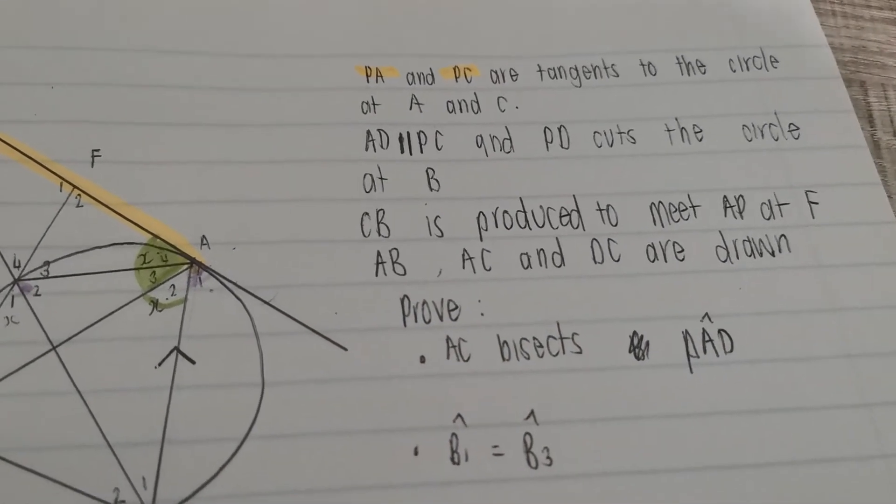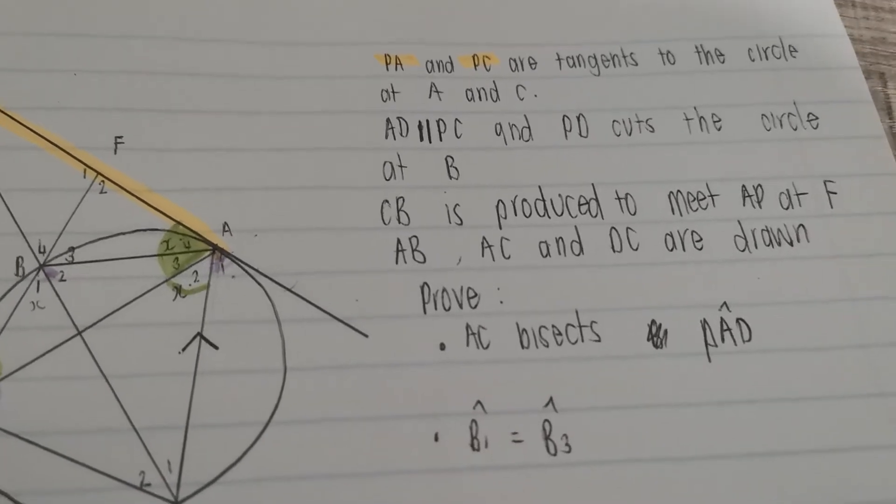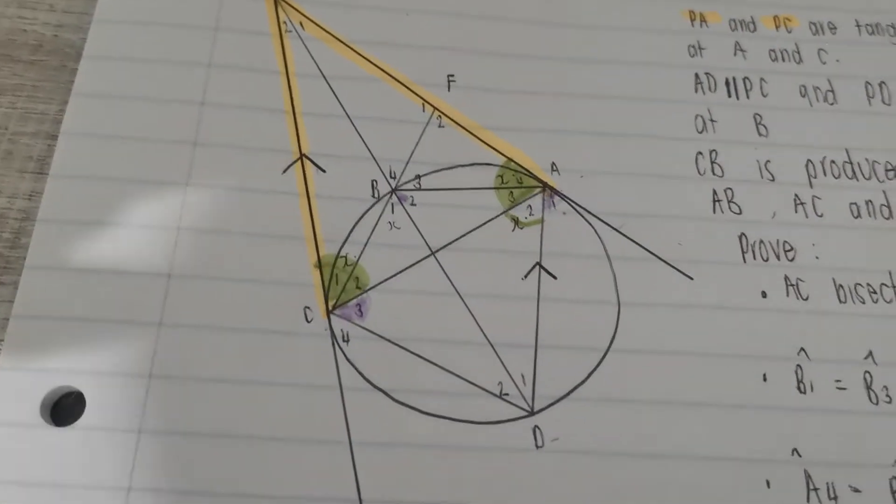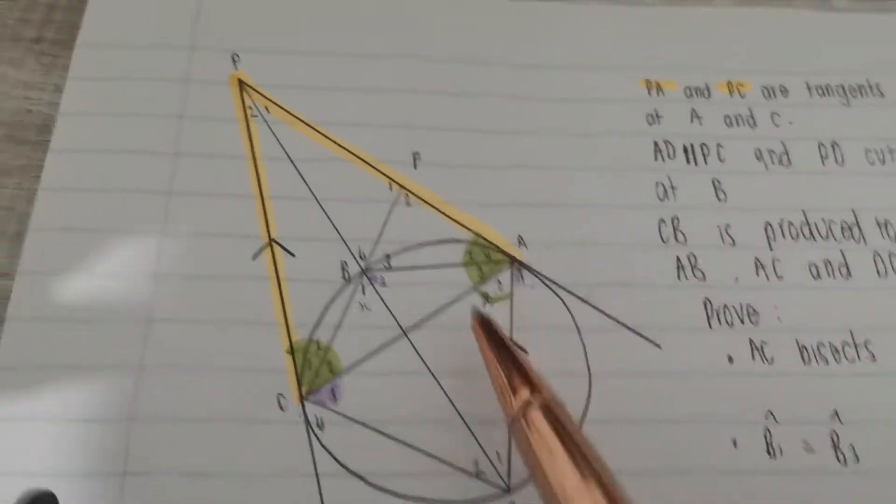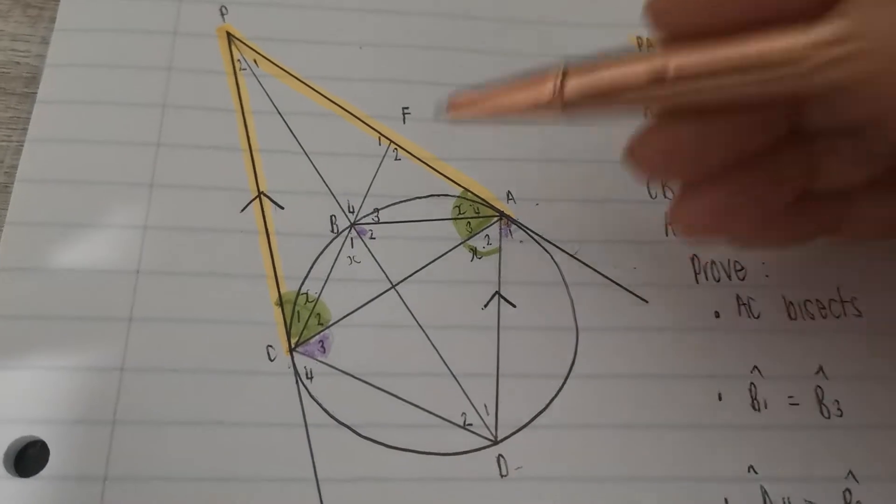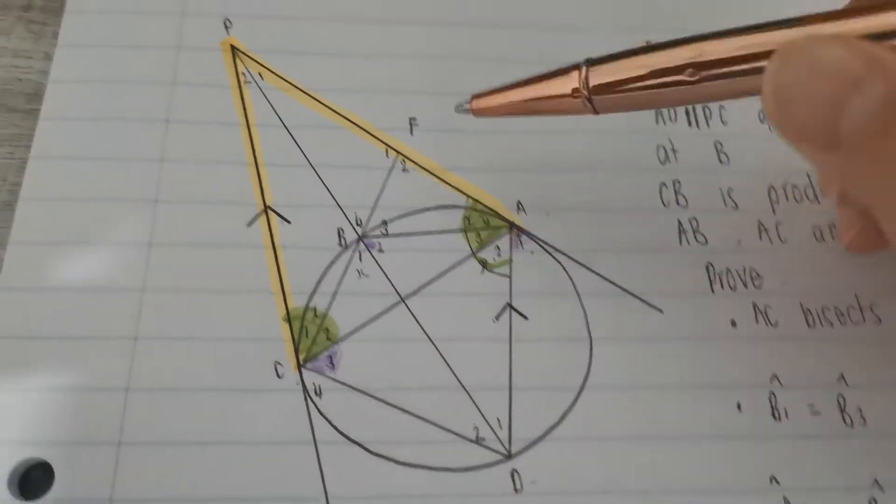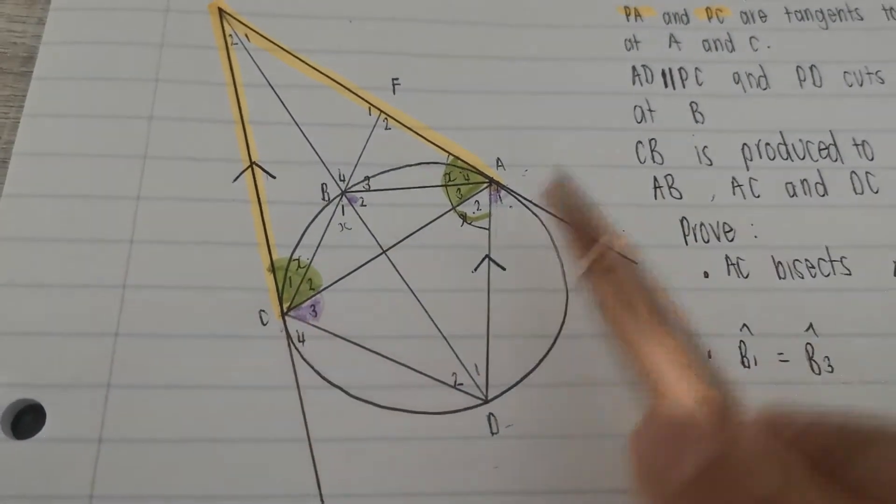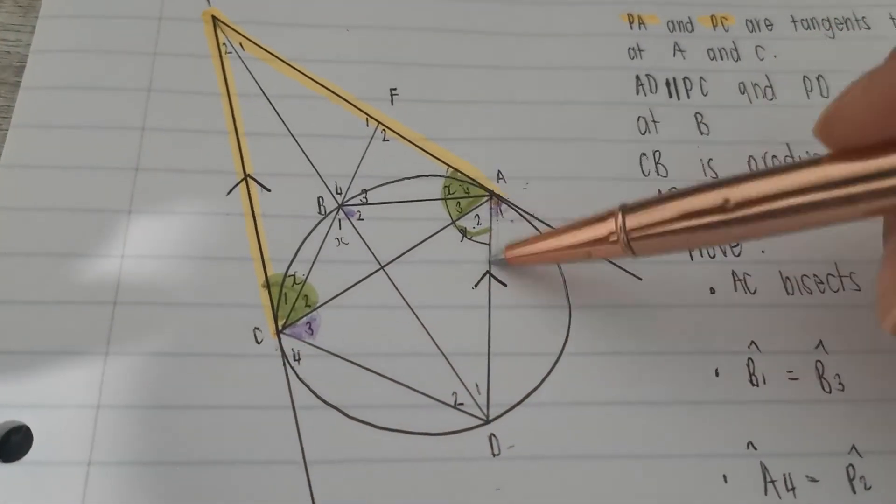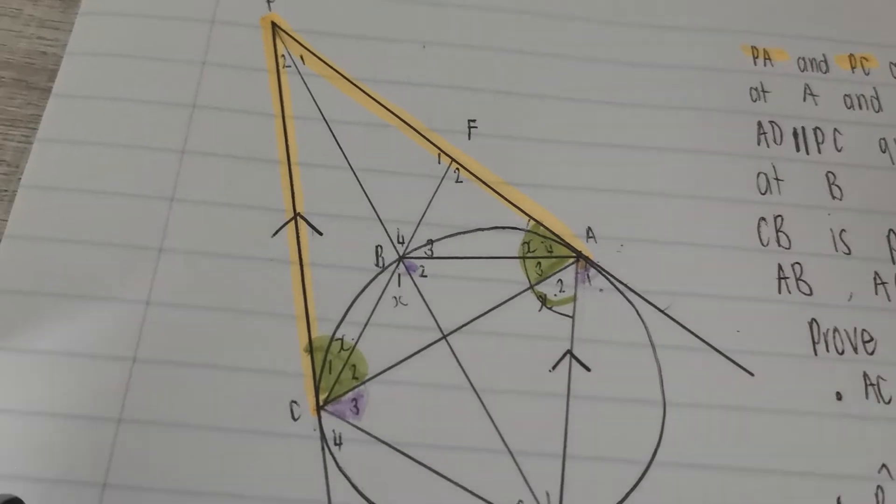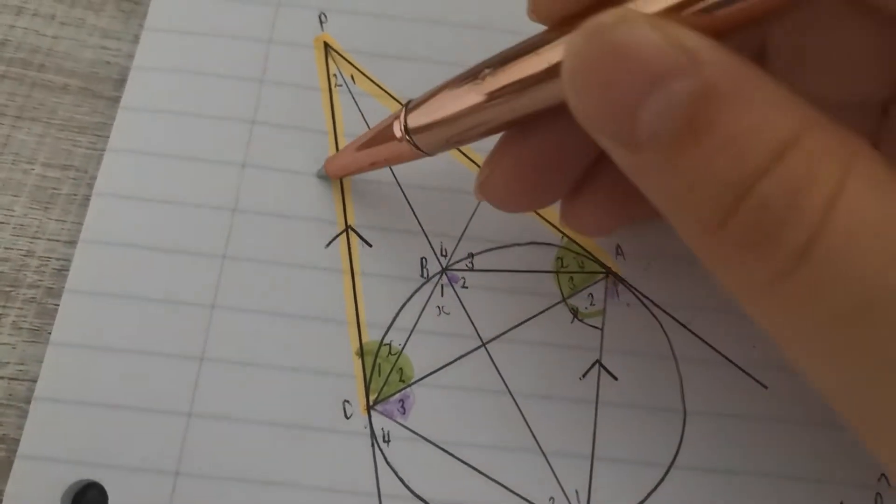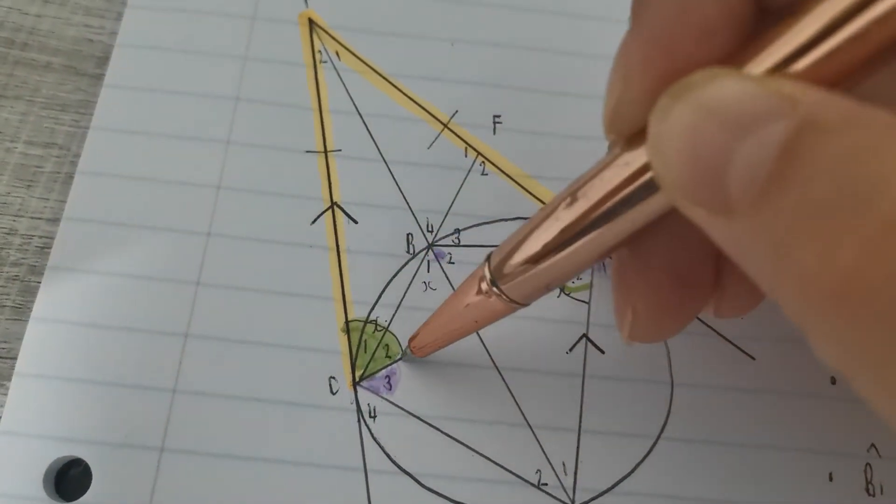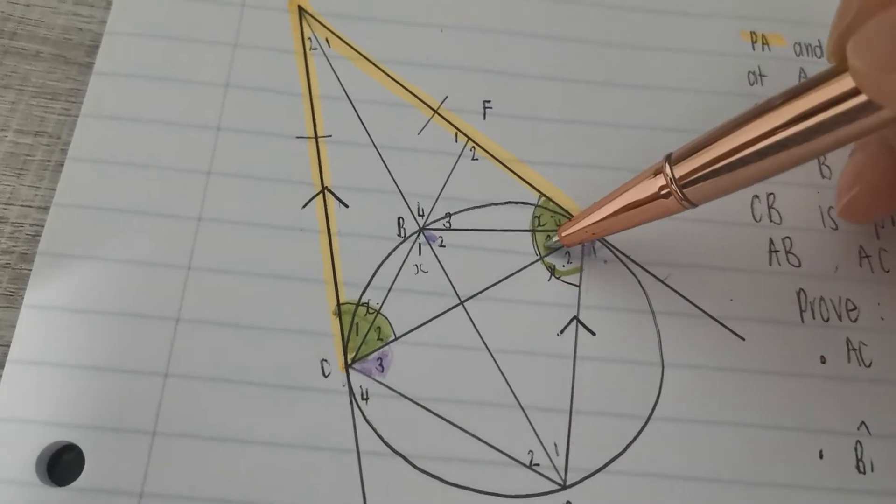The first question says prove, and obviously with reasons, that AC bisects angle PAD. Let's look at this, AC, I've filled in all the information already, AC, this line over here, bisects angle PAD. P, A, D. So that means this whole angle here is PAD. It wants us, or this question wants us to say that this line cuts this angle in half.